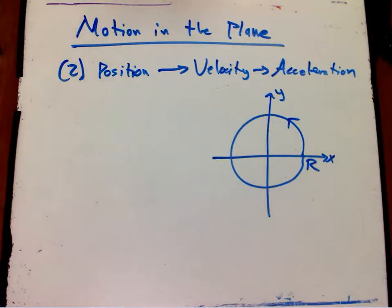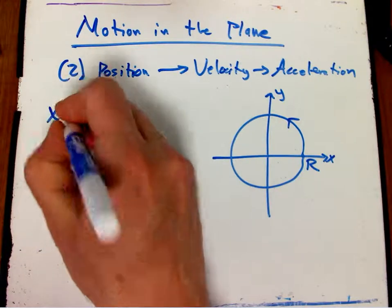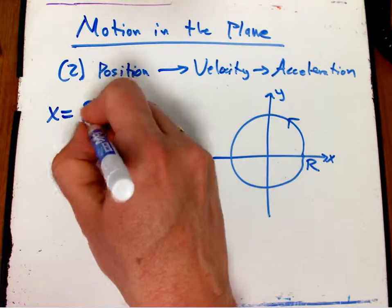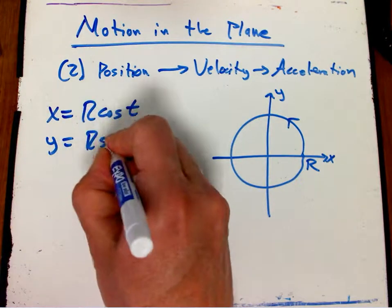Let's continue to look at motion in the plane, but not restrict it to straight line motion. So let's look at one of our favorite parametrized curves, circular motion, uniform circular motion, on a circle centered at the origin of radius r.